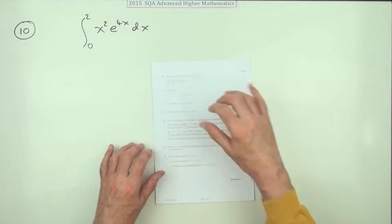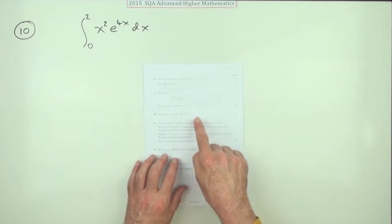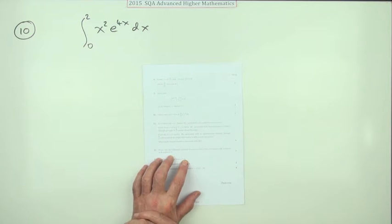So number 10 then from the 2015 Advanced Higher Maths, there we are, integration by parts, 5 marks.